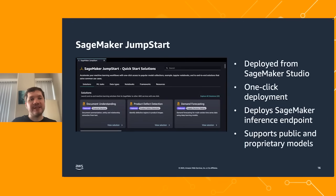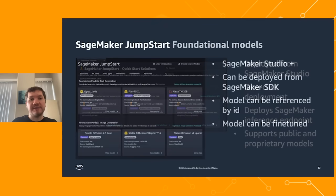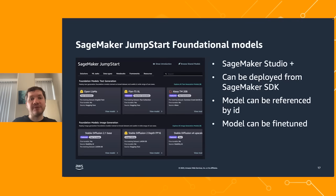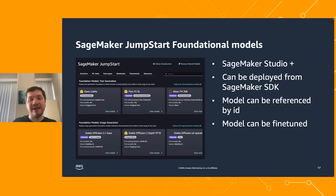SageMaker Jumpstart is a collection of models which you can deploy in a single click. It deploys a SageMaker inference endpoint and supports public and proprietary models. A specific section of Jumpstart covers foundational models, which can be deployed from both SageMaker Studio and the SageMaker SDK. The model can be referenced by ID and can even be fine-tuned without a single line of code.